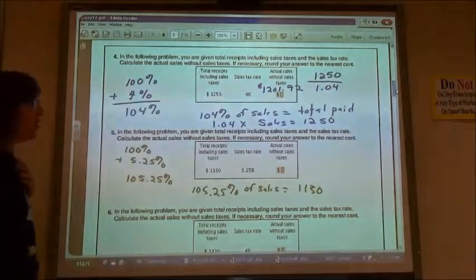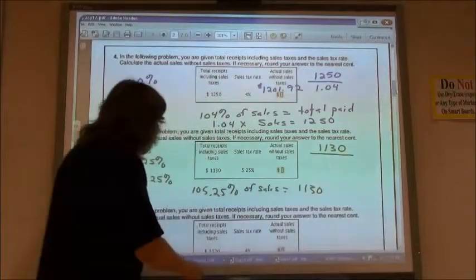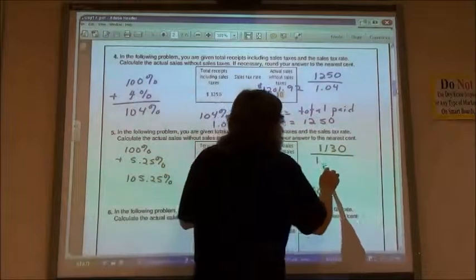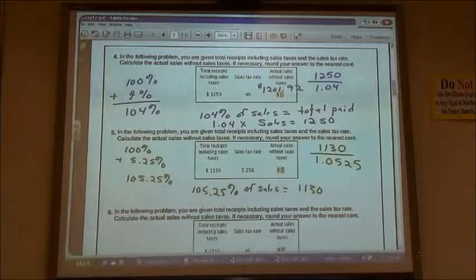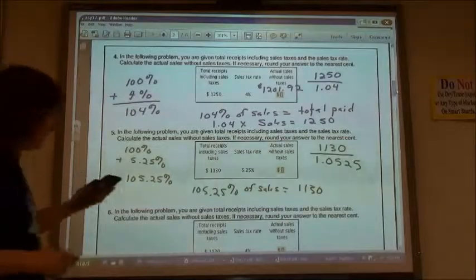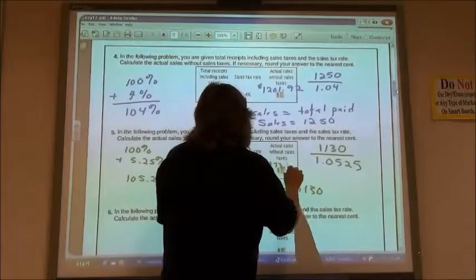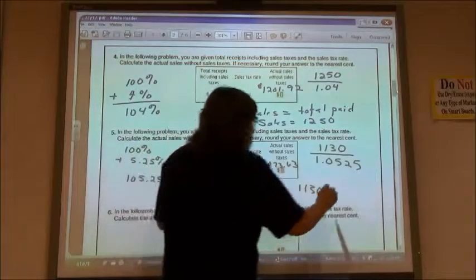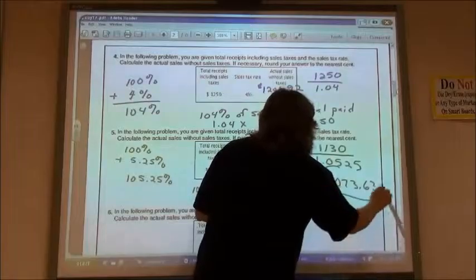So again, in order to solve that, I'm going to have to take my $1,130 and divide it by my 105.25%. So I'm going to move my decimal back and use 1.0525 then. So 1,130 divided by 1.0525 and rounding that off, I get $1,073.63.